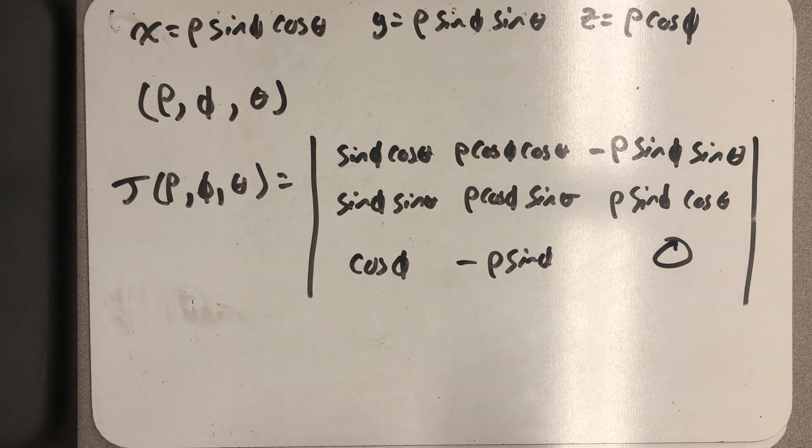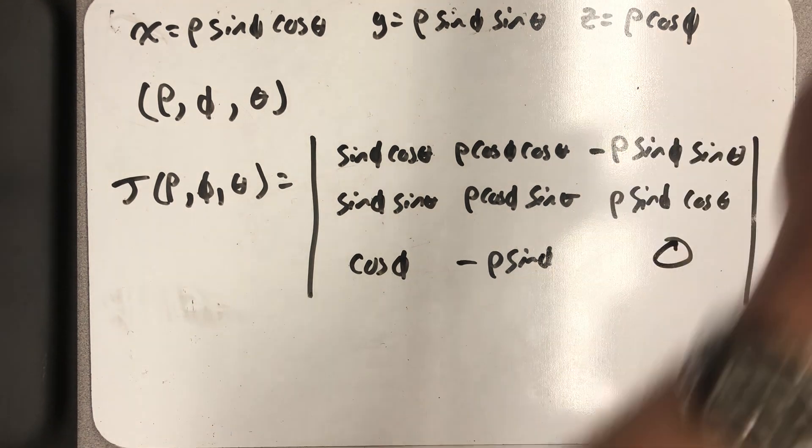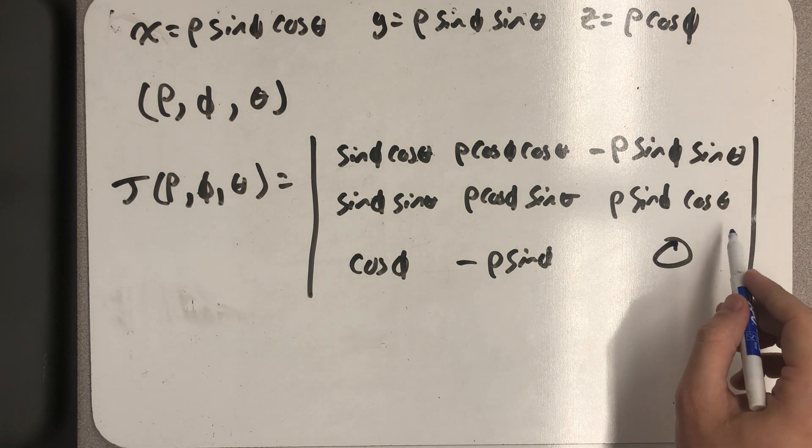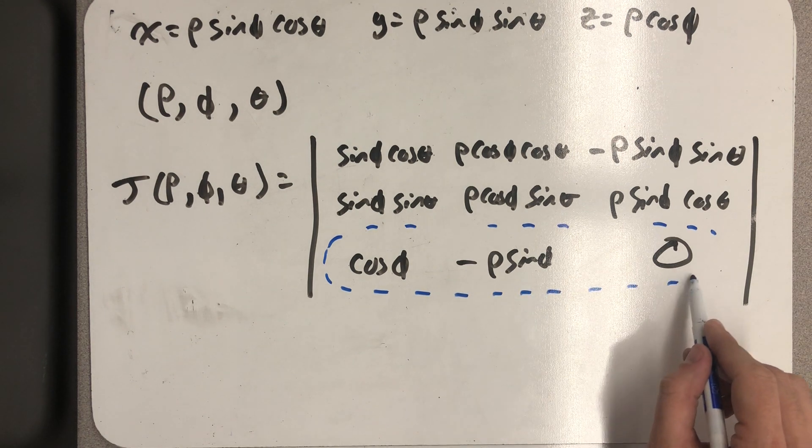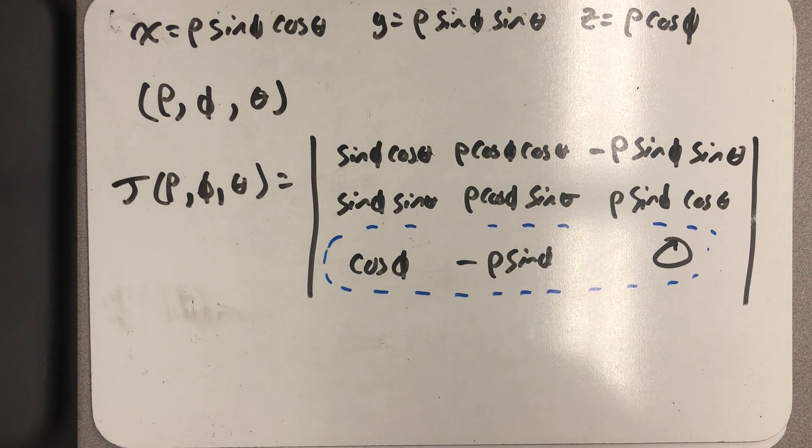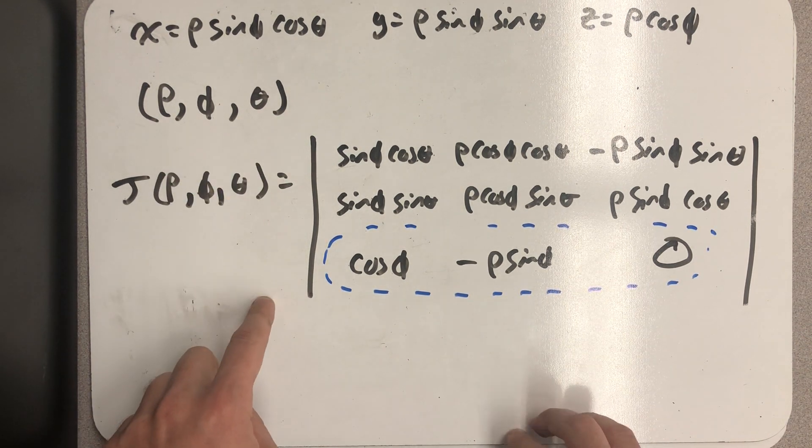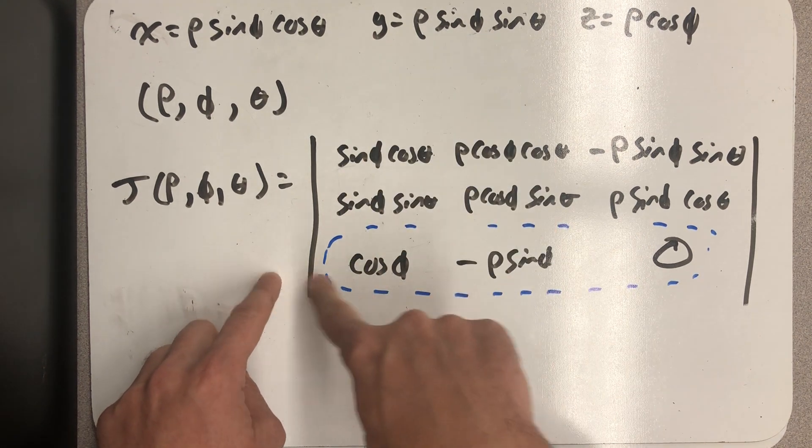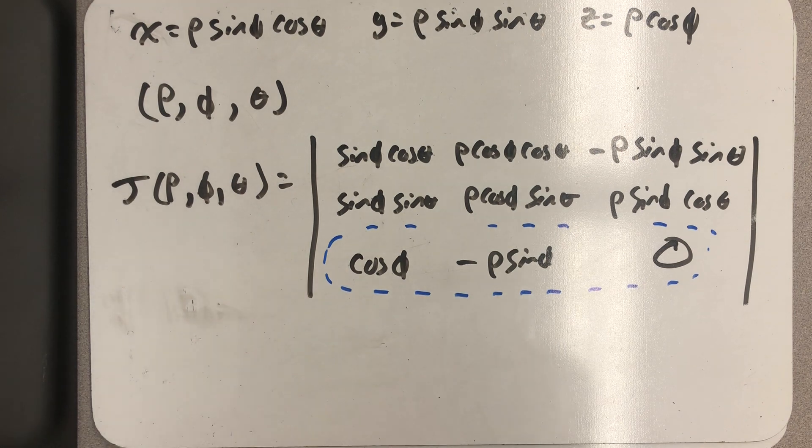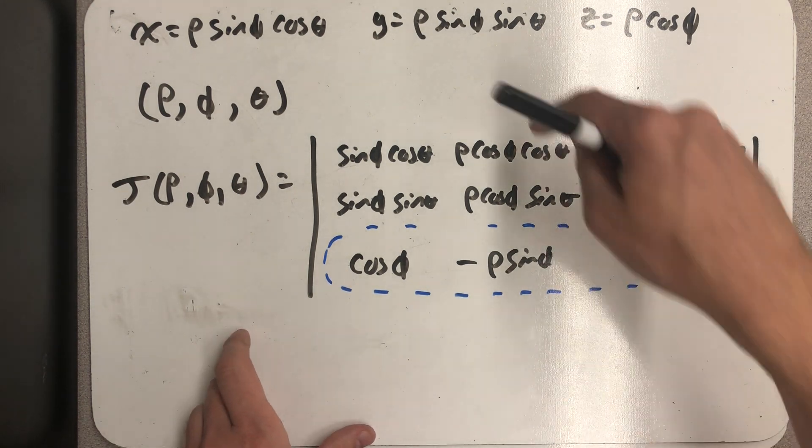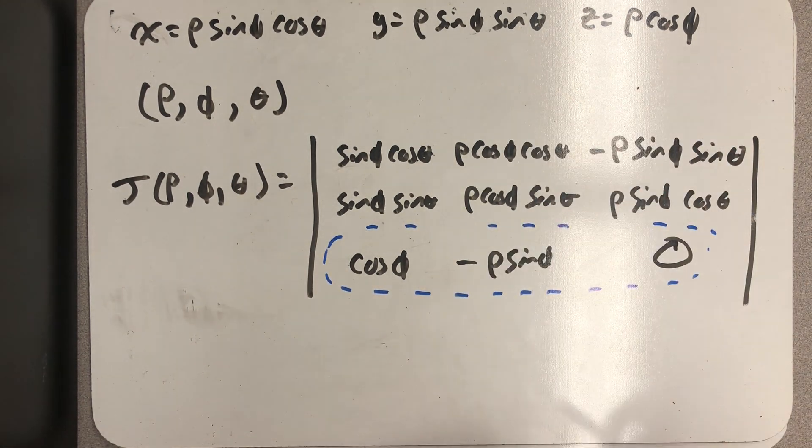And so when I go to take this determinant, I recommend expanding over the last row here, because that zero gets rid of one term I have to worry about. When expanding over this last row, if I think about this is the third spot in the first column, so I add one and three, and I get four, the first term is going to be positive. The next term, this is two and three, five, I get a minus there.